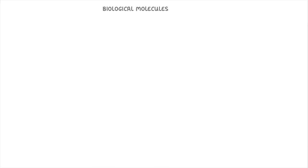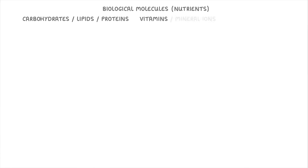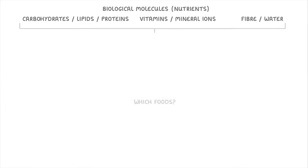In today's video we're looking at the different biological molecules or nutrients that you need for a healthy balanced diet. We'll cover carbohydrates, lipids, proteins, vitamins, mineral ions, fiber and water, and in each case we'll explain which foods you can get them from and why you need them. Just before we start though, I want to point out